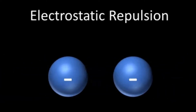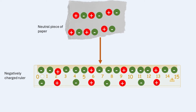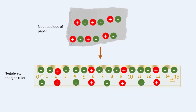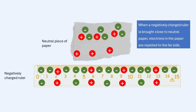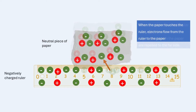If a negatively charged plastic ruler is held near a piece of neutral paper, the negatively charged ruler repels the electrons in the paper to the far side, leaving an excess of protons on the side closest to the ruler. That side is now positively charged. Two forces are at work: an attraction force between the ruler and the positive side of the paper, and a repulsion force between the ruler and the negative side. Because the distance to the positive side is smaller, the attraction force is stronger and the paper is attracted to the ruler.